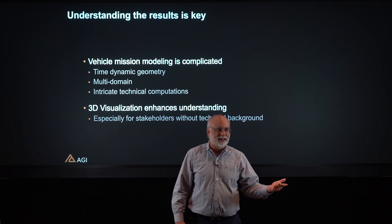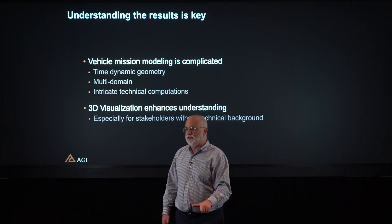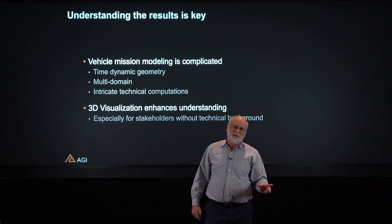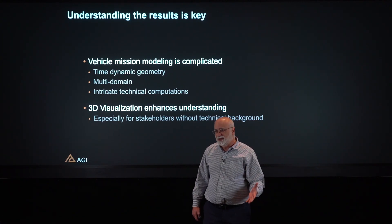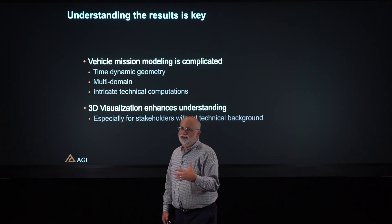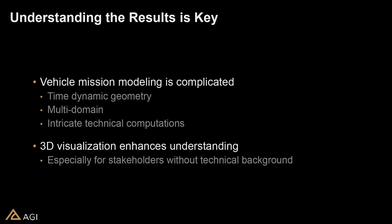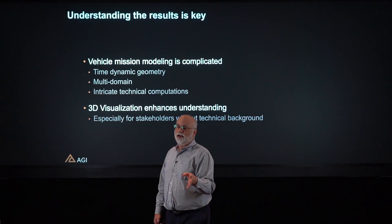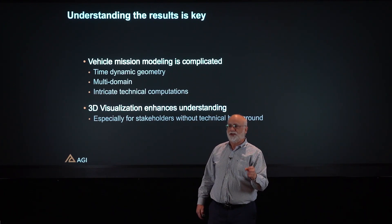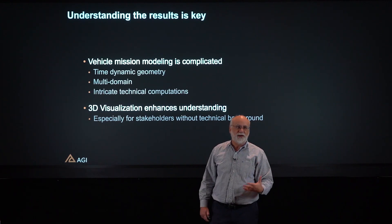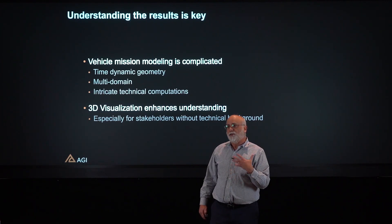Representative testing is the key, but also understanding the results. Vehicle mission modeling is complicated — it's time dynamic, multi-domain, with lots of technical computations. An Excel spreadsheet is a way to understand information but doesn't communicate it very well. 3D visualization is a great way to understand what's going on. Understanding the results could involve graphs, animations, and pictures that help you understand what the test is trying to do and what the results mean.